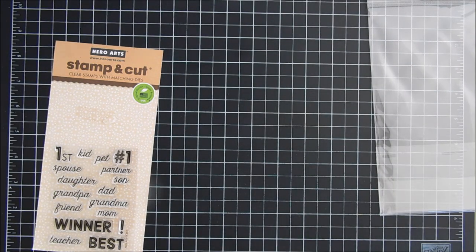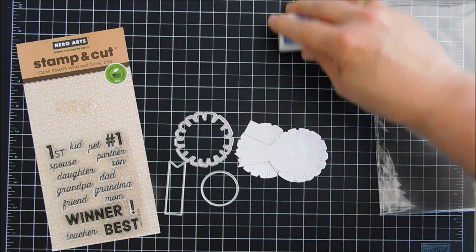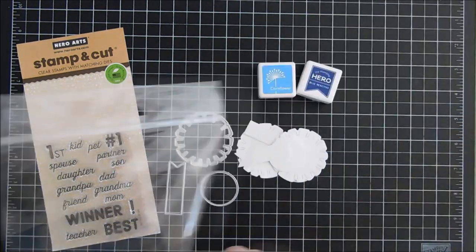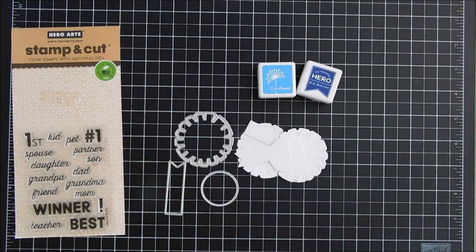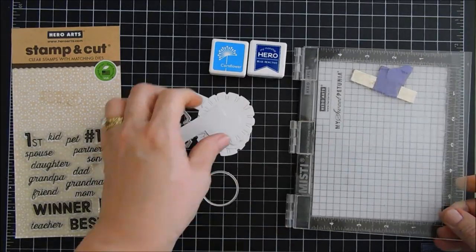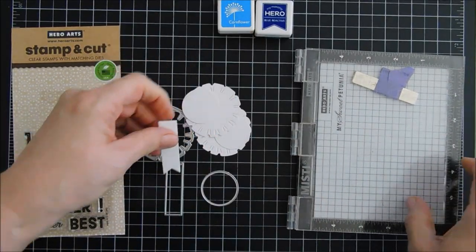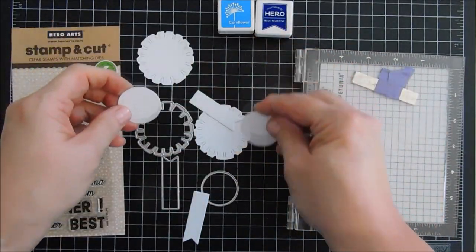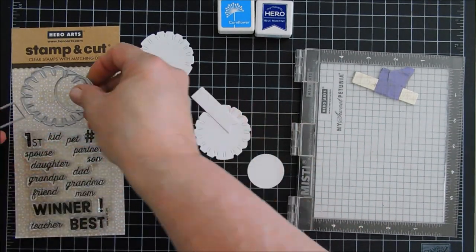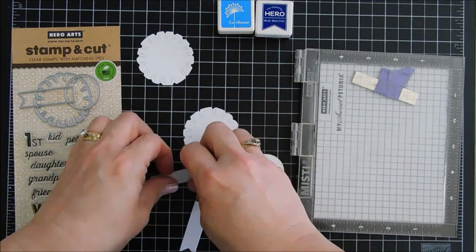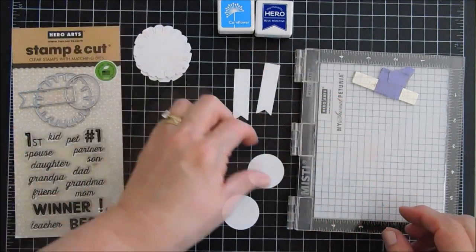The inks that I'm using are from Hero Arts too. I thought we would make a Hero Arts Try It Out Tuesday. I have Cornflower, a pretty blue, and then I have a blue reactive ink. I think the blue reactive ink may have come in a card kit or one of the Hero Arts card kits, but it's a really pretty blue.